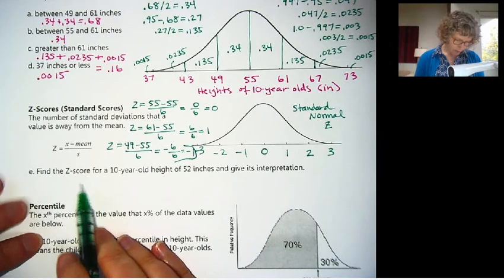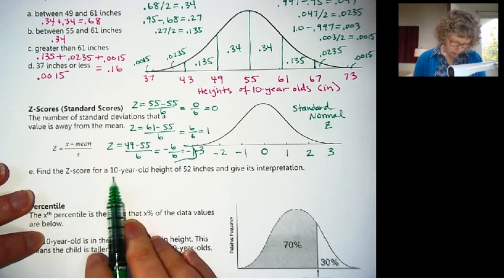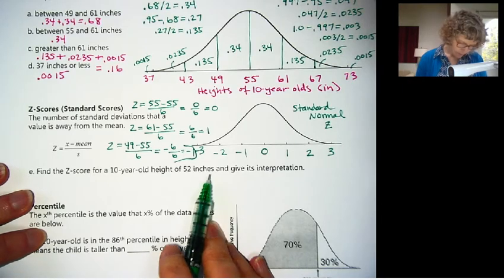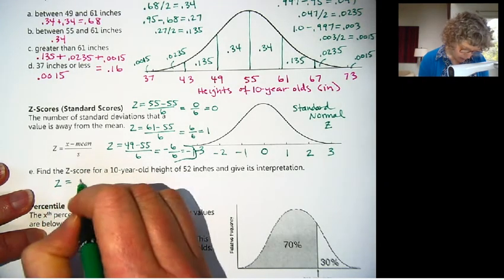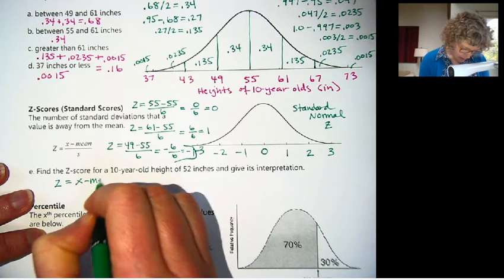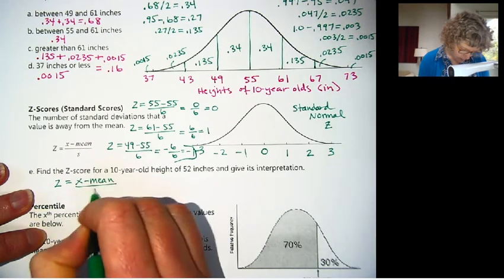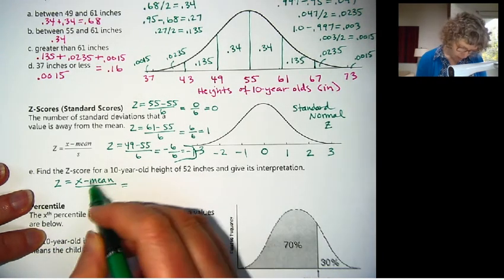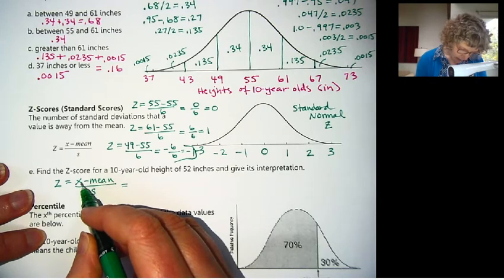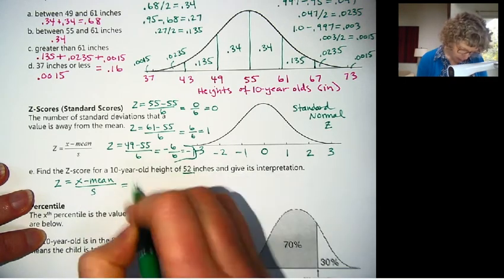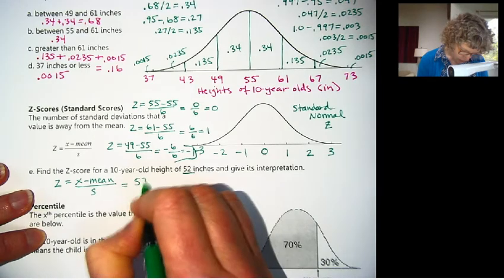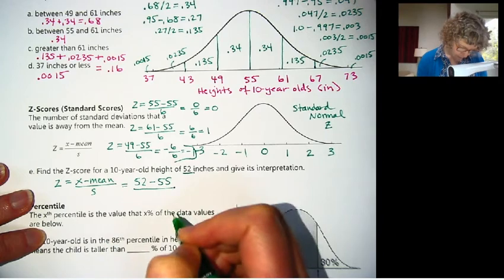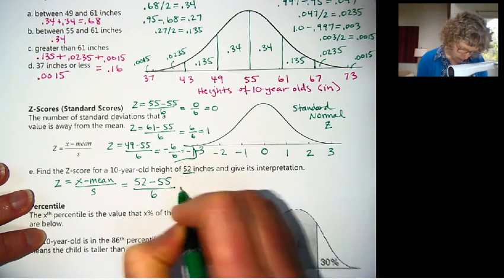Let's do 49. 49 minus 55 over 6. Okay, this is also 6 away, but it's in the negative direction. So we have, we're subtracting 55, so that's negative 6 over 6, or negative 1.